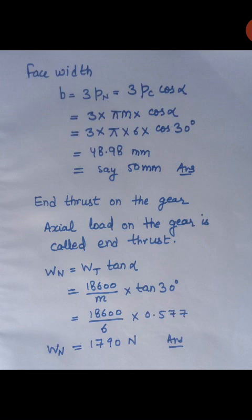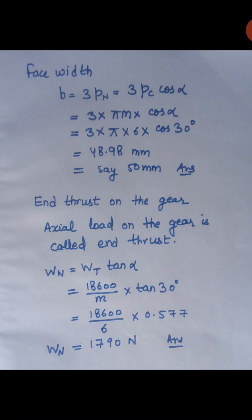Now we will calculate the end thrust on the gear as asked in the question. The axial load on the gear is called the end thrust. It is given by Wa equal to Wt tan alpha. Wt is 18600 by m and alpha is 30 degrees. Putting the value of m equal to 6, we get the value of Wa equal to 1790 Newton. This is our required answer.